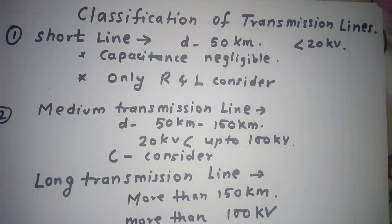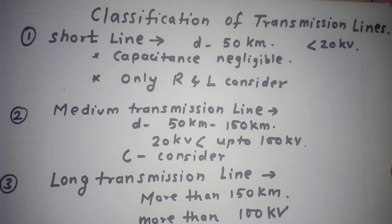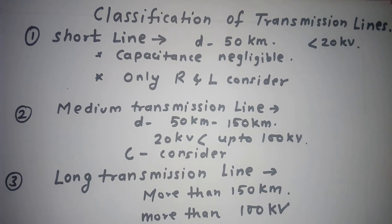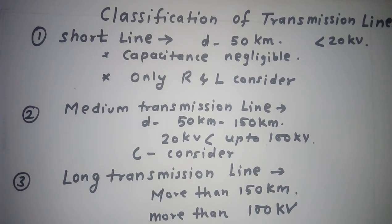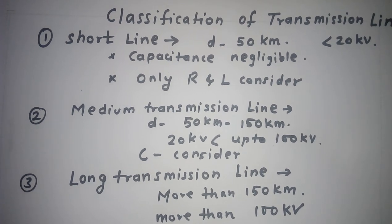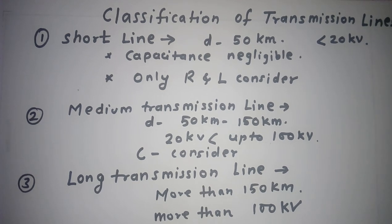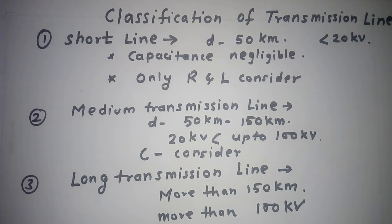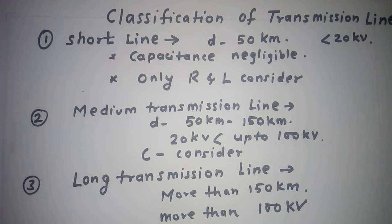Today we'll discuss the classification of transmission lines. There are three types. The first is called the short transmission line. In a short transmission line, the distance is up to 50 kilometers and the voltage level is always less than 20 kilovolts, because of the smaller length there will be lower voltage.